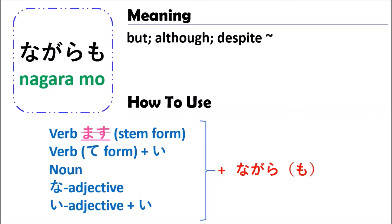The verb after nagaramo is optional. Sometimes you can use nagaramo followed by something, or sometimes just say nagaramo on its own. It depends on you and the situation you are talking about.